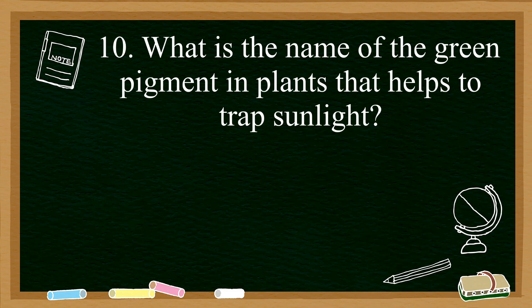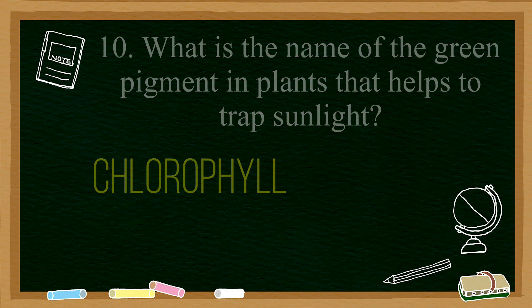Ten: what is the name of the green pigment in plants that helps to trap sunlight? This is a very easy one. The answer is chlorophyll, and it's mostly used in the leaves to make food.